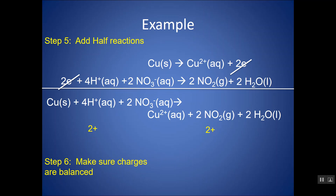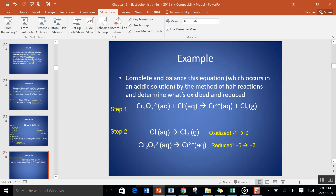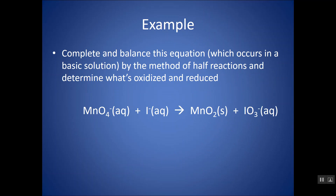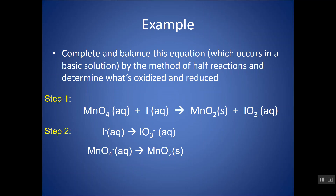Let's look at another example, this time in basic solution. As soon as I see basic solution, I want to first disregard the fact that it's basic and treat it as if it were in acidic solution. Split into two half reactions — keep the I's together, and manganese together. The I is being oxidized from −1 to +5; the manganese is being reduced from +7 to +4. Top is oxidation, bottom is reduction, though oxidation numbers aren't strictly needed.